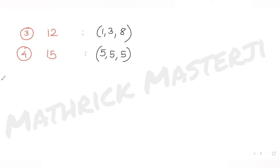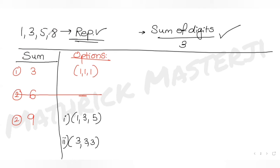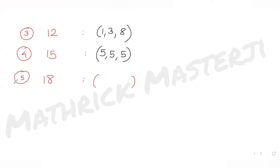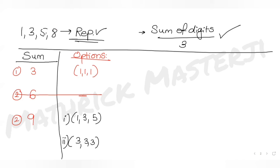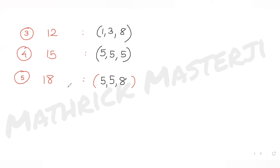Next case: sum = 18. Taking {5, 5, 8}: 5+5+8 = 18, which works. Trying {3,5,8} gives 16, and {8,8,1} gives 17, {8,8,3} gives 19 — none of those work. So the only valid combination for sum = 18 is {5, 5, 8}.